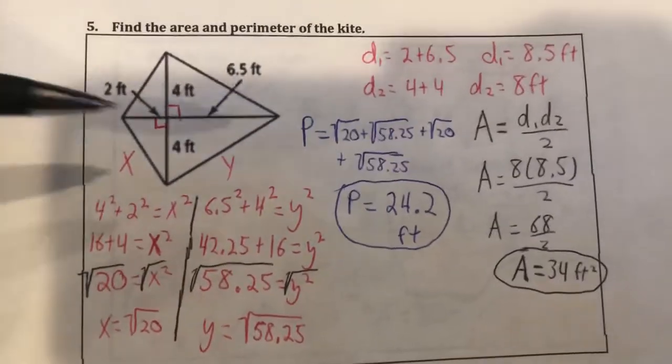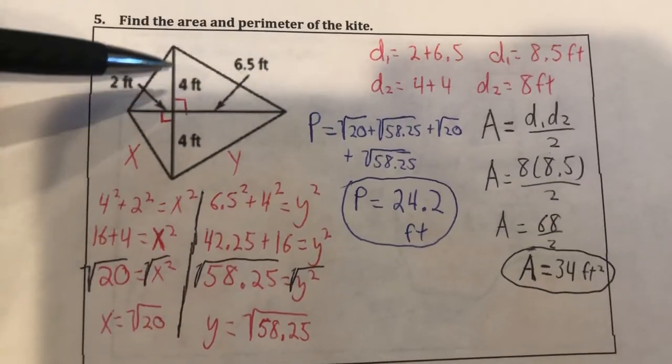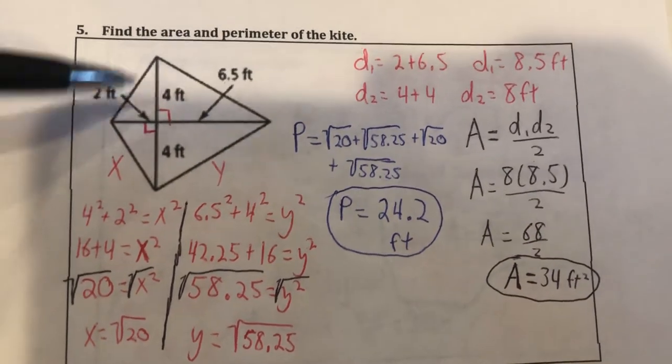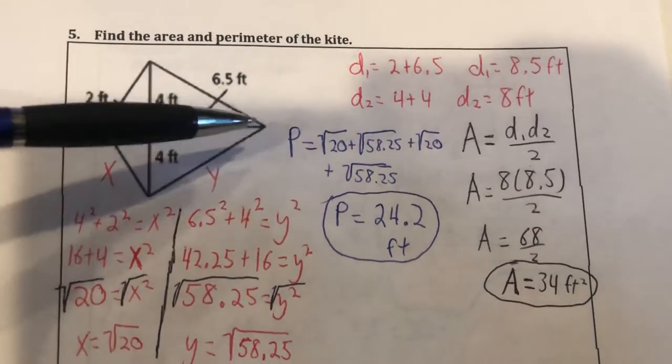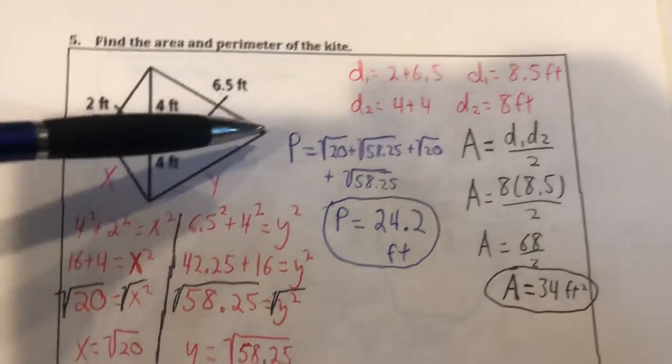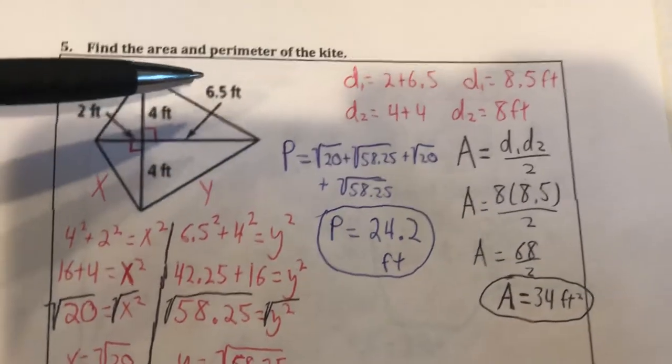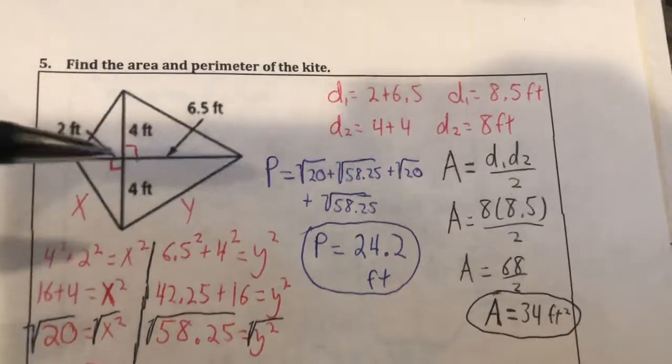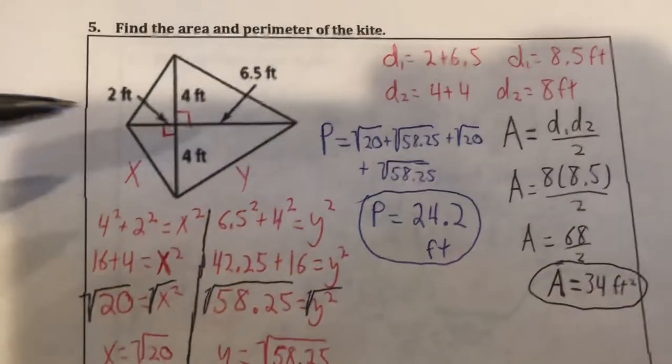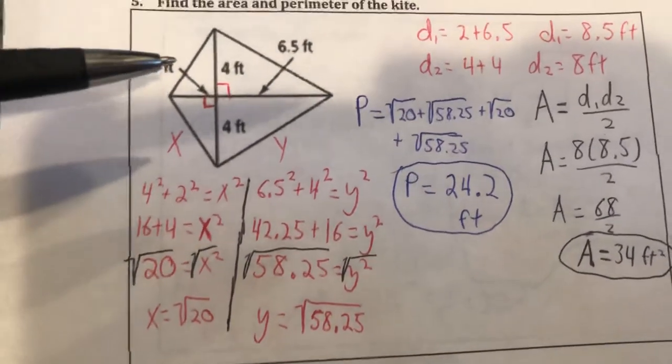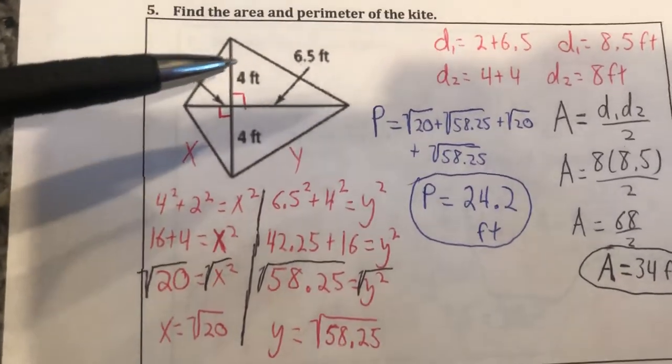Now for the perimeter, the two sides here on the left, these two are actually going to be the same length. The two sides here to the right are going to be the same length. Remember with a kite we have two pairs of consecutive congruent sides, so you guessed it, we're going Pythagorean theorem again to try to find those lengths.